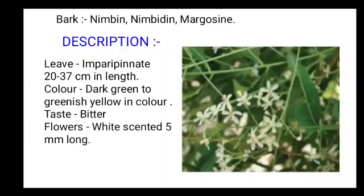Description of neem — leaves: imparipinnate, 20–37 cm in length. Color: dark green to grayish yellow. Taste: bitter. Flowers: white, scented, 5 mm long.